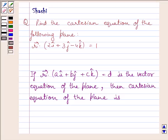First of all, let us understand that if this is the vector equation of the plane, then Cartesian equation of this plane is Ax plus By plus Cz is equal to D.